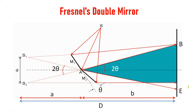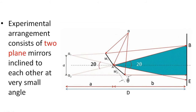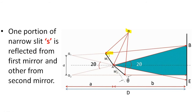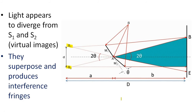Two coherent sources are obtained by the phenomenon of reflection. This is the actual source S, and from it we got two virtual sources S1 and S2, produced by reflection. These are coherent sources. This experiment consists of two plane mirrors M1 and M2 inclined at a small angle theta, and they are nearly coplanar — the angle between them is almost 180 degrees, so the difference is very small. One portion of light is reflected by M1, and the other by M2. Light appears to diverge from virtual images S1 and S2, and these lights will superpose and produce interference fringes.